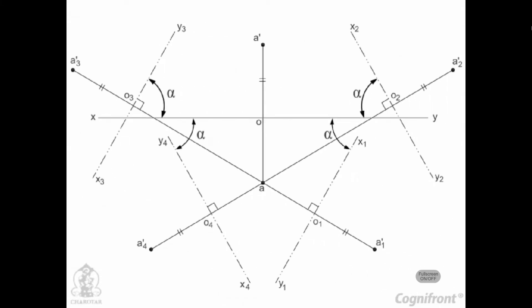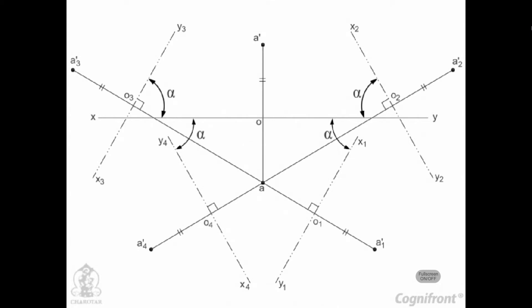The new reference line making the angle alpha with XY can be drawn in four different positions, as shown in the figure, by lines X1, Y1; X2, Y2; etc. All the front views are projected from the top view A and their distances from their respective reference lines are equal — that is, A dash 1 O1 equals A dash 2 O2, and so on, equals A dash O.